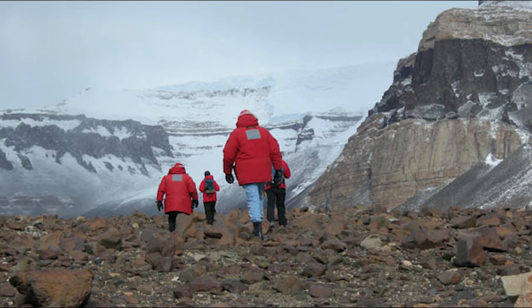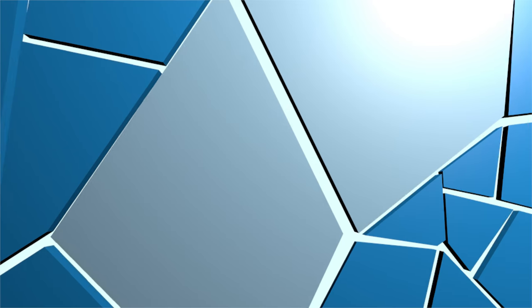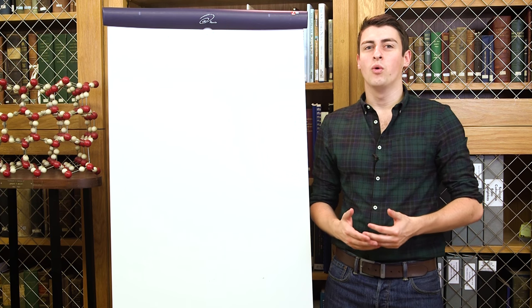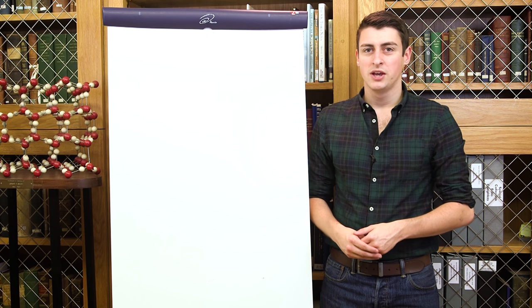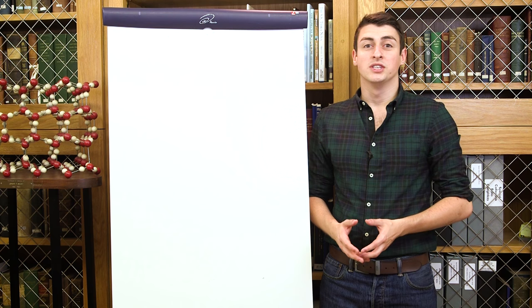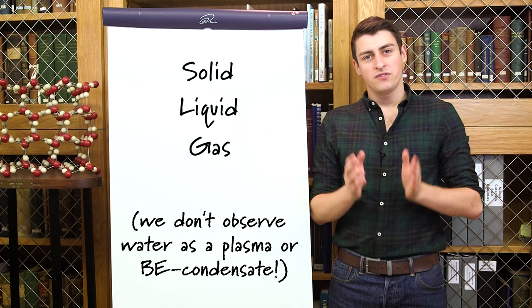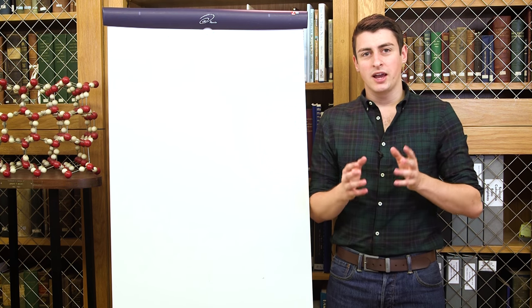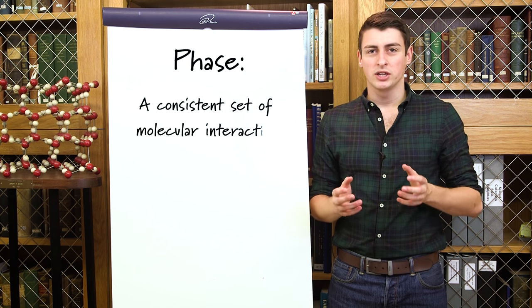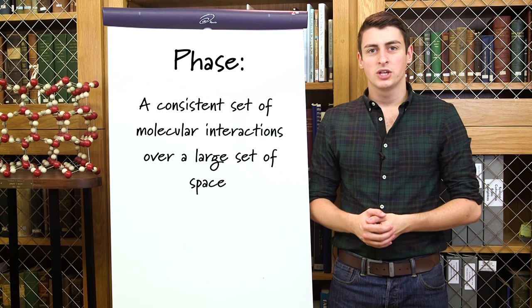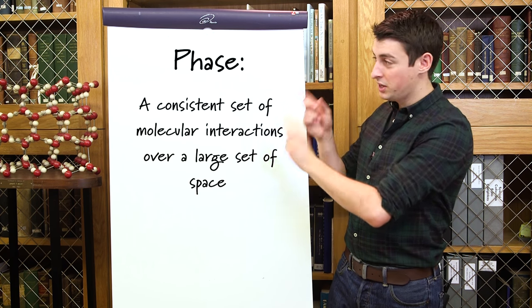Now, unfortunately at this point we're probably going to have to break out some physics. In order to talk about water going from solid to liquid and vice versa, we need to talk about phase transitions. Phase is another word for what we call the state of a substance. A substance like water can have different states — solid, liquid, or gas — and what defines a state is a consistent set of molecular interactions over a large set of space.